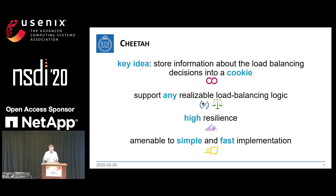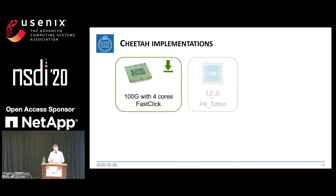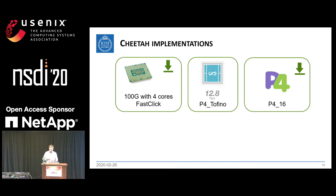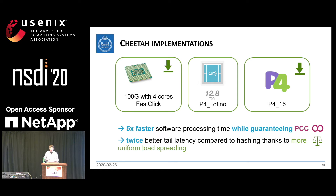This simple scheme allows for very fast implementation. We built a full-featured software implementation that can do 100-gigabit networking with four cores and supports multiple load-balancing mechanisms and metrics — fully available. We also built a prototype on P4 Tofino which can potentially handle terabits per second, but for NDA reasons we cannot release that implementation. So we built a new one from scratch using P4-16, which is fully available. Cheetah satisfies all requirements, guaranteeing per-connection consistency while processing packets five times faster than a software stateful load balancer, and reducing tail latency by a factor of two compared to hashing.